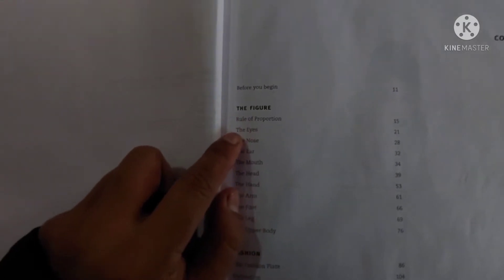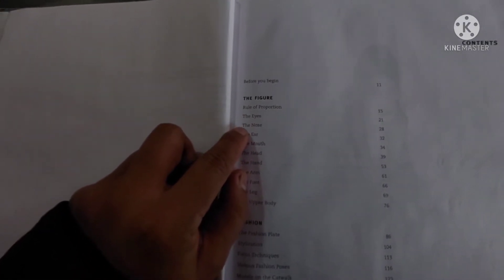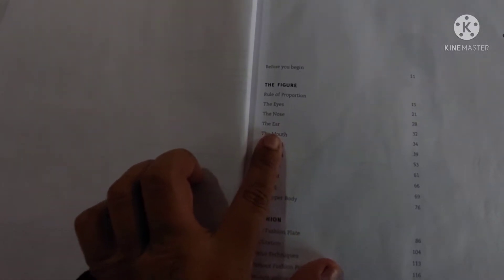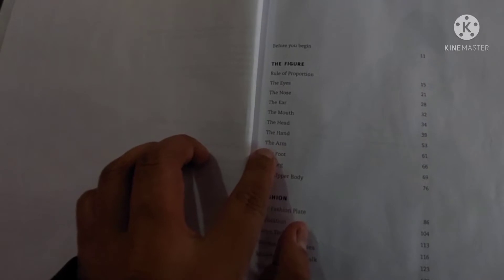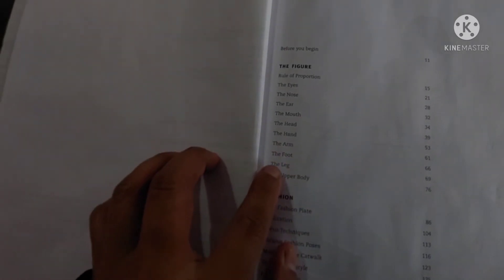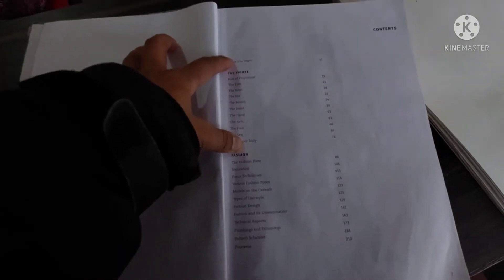We are going to talk about the rules of proportion - the eyes, the nose, the ear, the mouth, the head, the hand, the arm, the foot, the leg, the upper body.